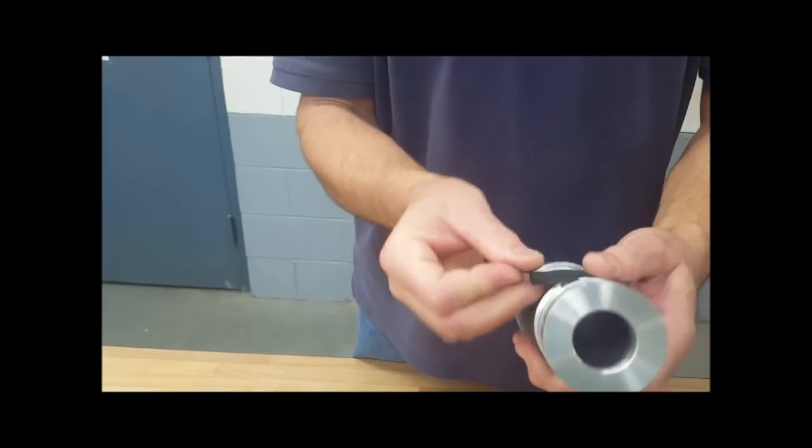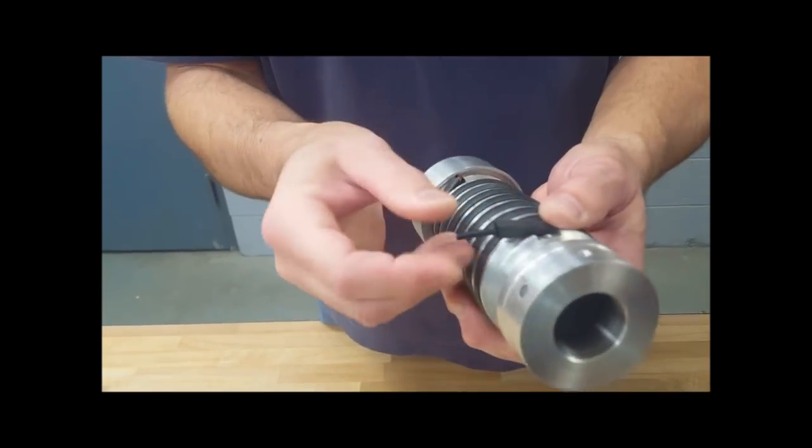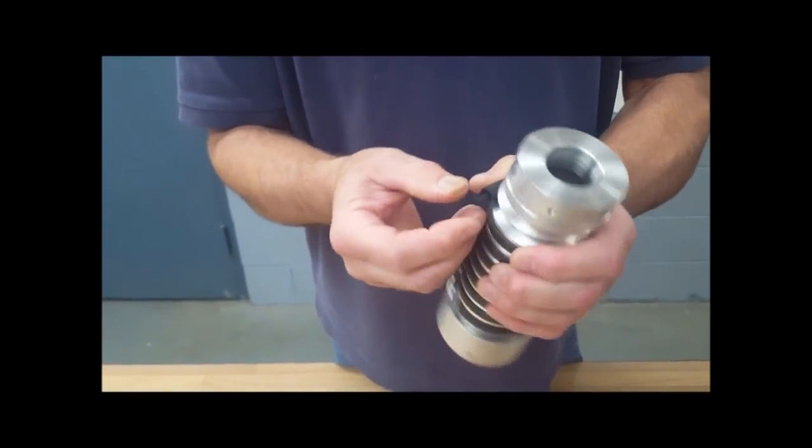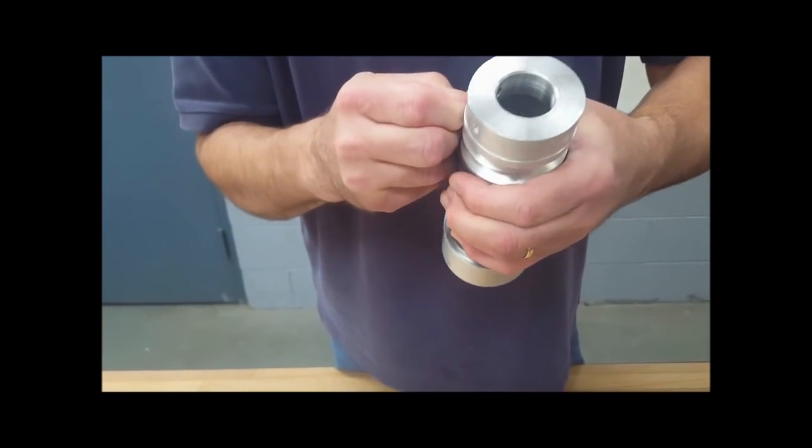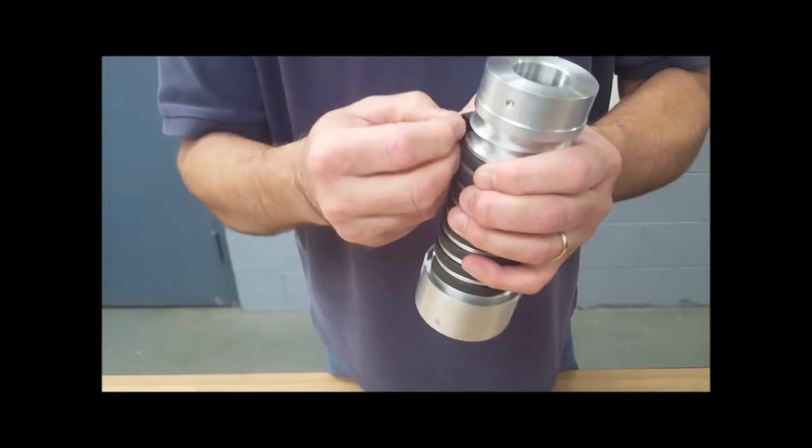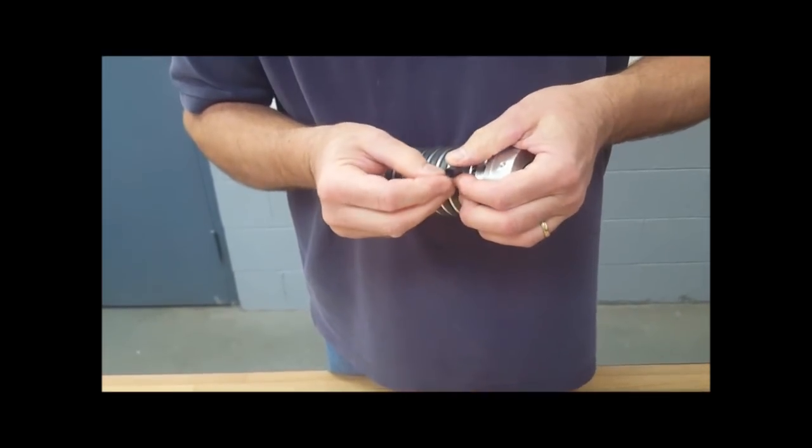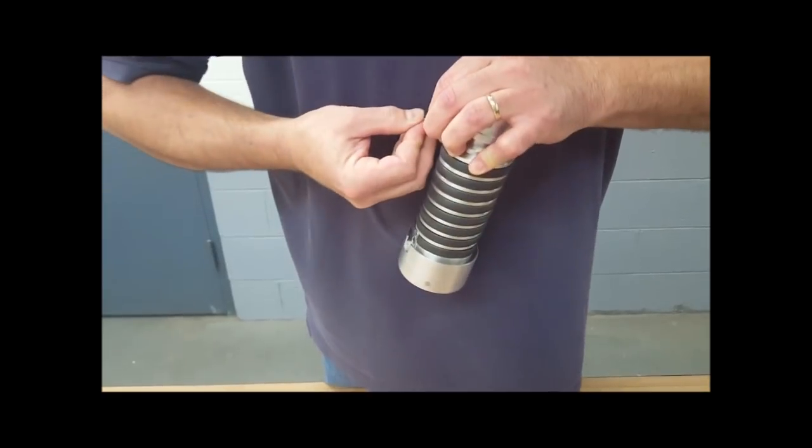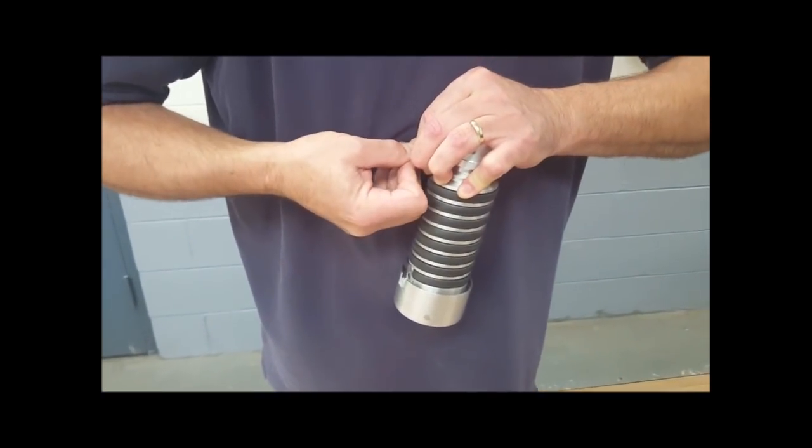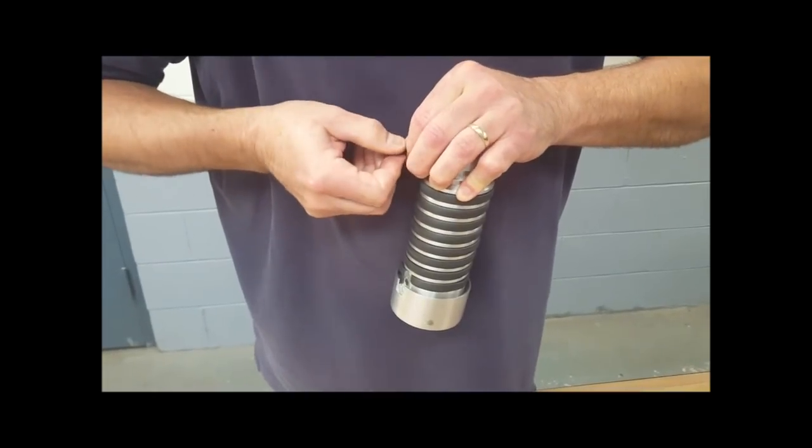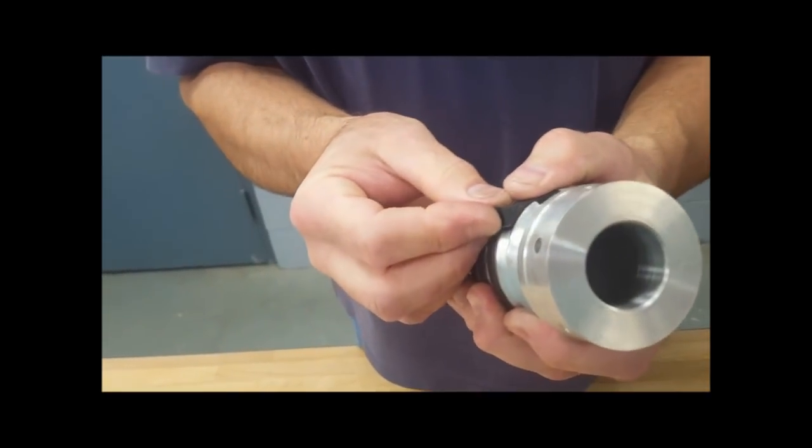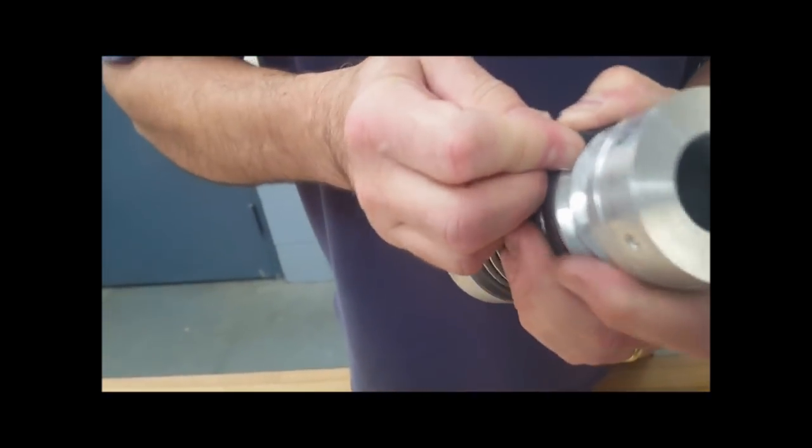Once we get to this stage, we're going to take the plug and insert it into the tubing itself. Sometimes this process could be a little bit stubborn at this point. If it gets to that point, use some water with some soapy solution and just start pressing in the plug. The plug should be inserted most of the way into the tubing.